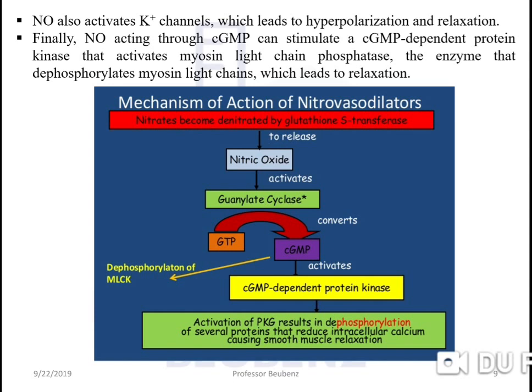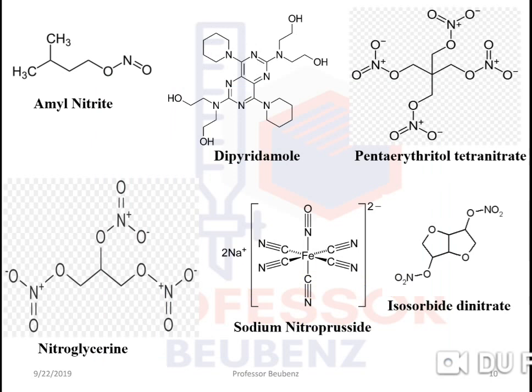Here is the diagrammatic presentation of the mechanism of nitrovasodilators. Nitrates release nitric oxide, which activates guanylyl cyclase. GTP is converted into cGMP, which activates cGMP-dependent protein kinase. Activation of this protein kinase results in dephosphorylation of several proteins that reduce intracellular calcium, causing smooth muscle relaxation.